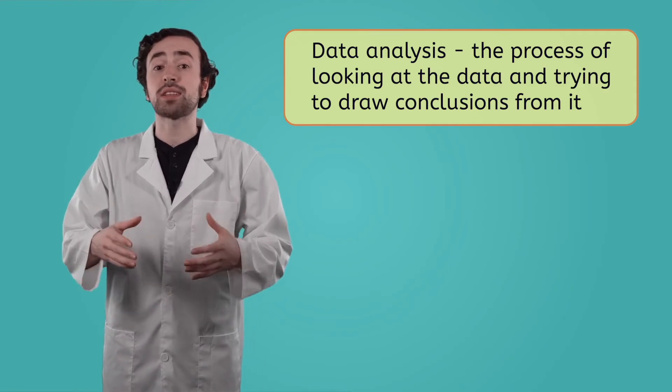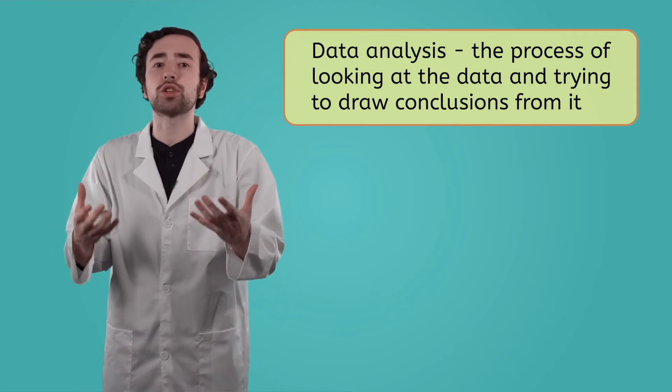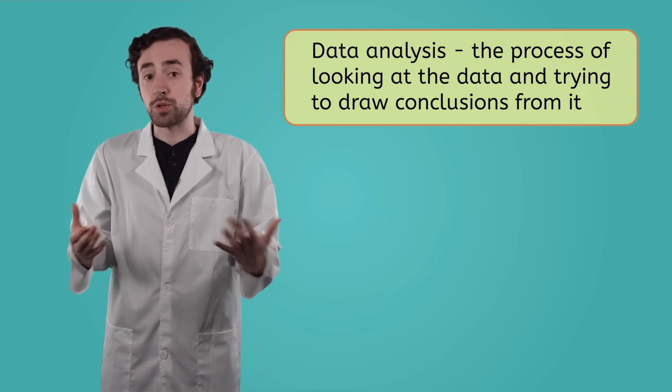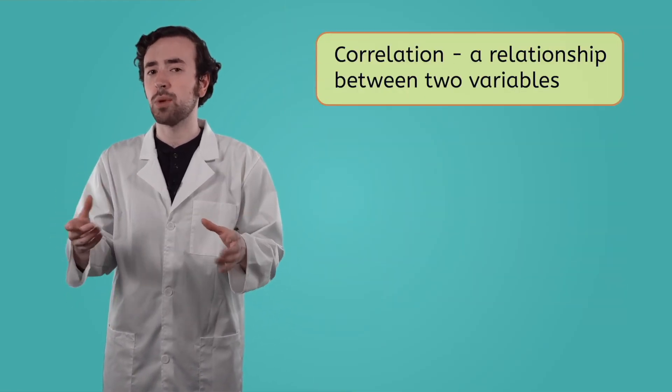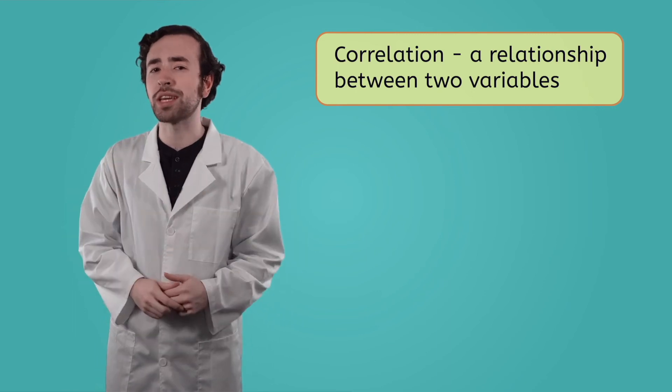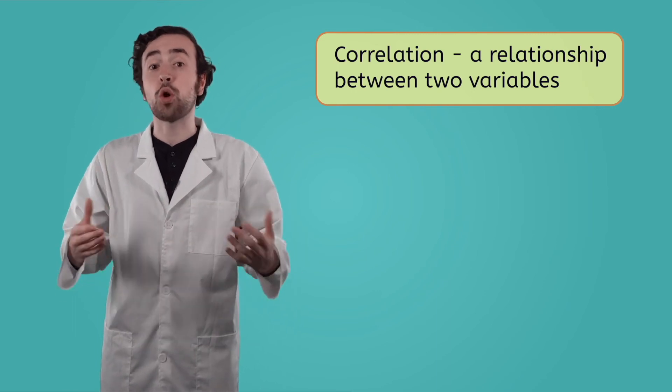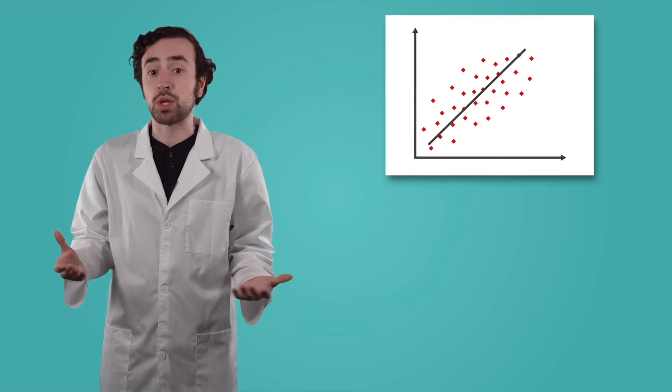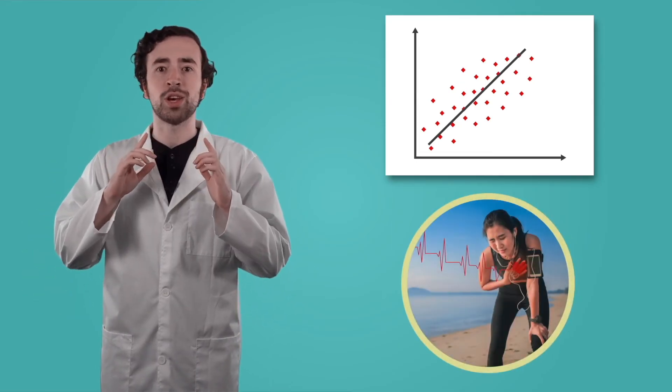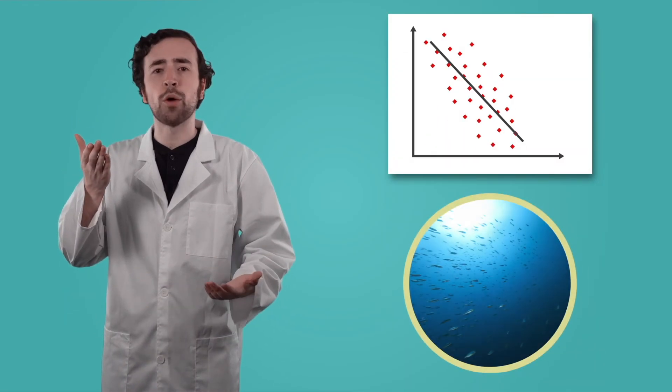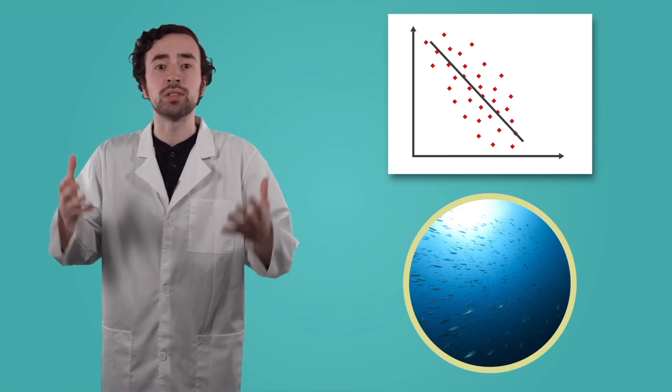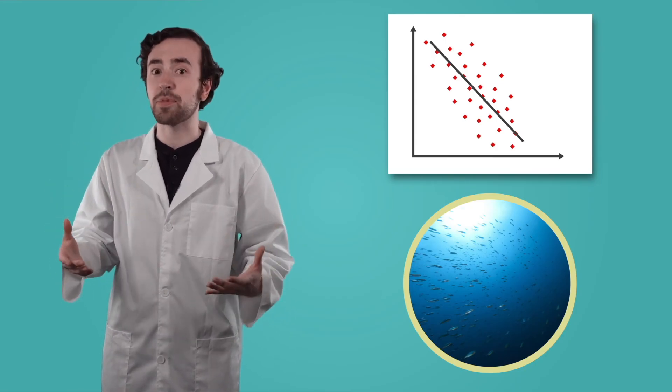Data analysis is the process of looking at data and trying to draw conclusions from it. While doing this, scientists look for relationships between variables, also known as correlations. Variables can be correlated in different ways. Some variables will increase together, like how heart rate increases with exercise. Other times, one variable will increase as the other decreases, like how the amount of light in the ocean decreases as the depth increases.